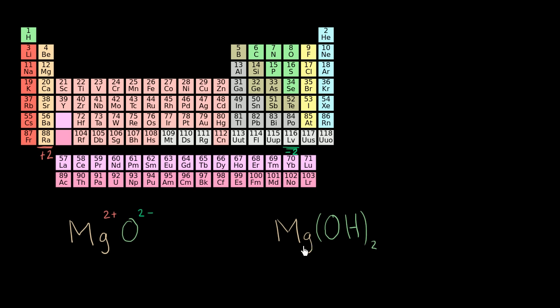Now let's think about this one right over here. Magnesium hydroxide. Well, just like before, magnesium typically has an oxidation state. It likes to give away its electrons. So it could have an oxidation state of +2.